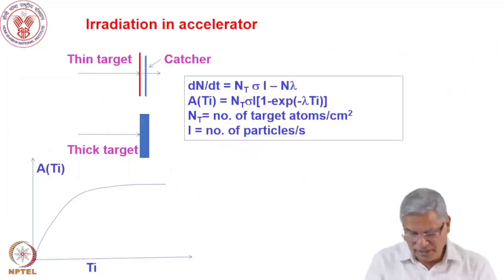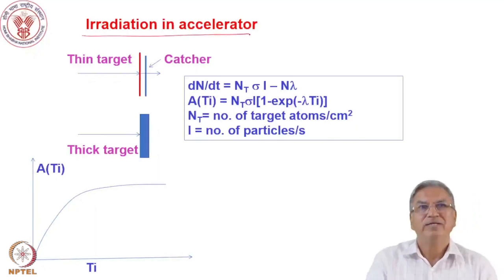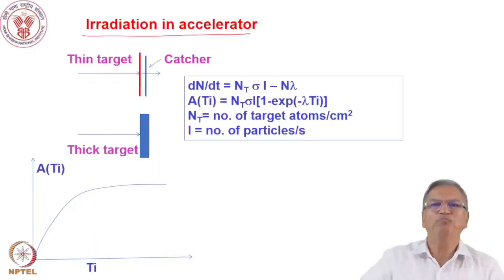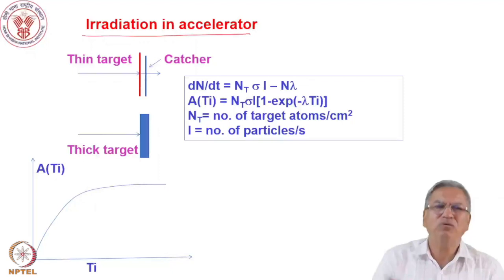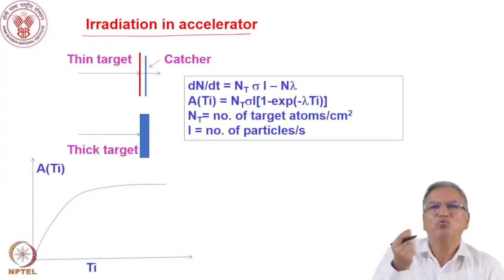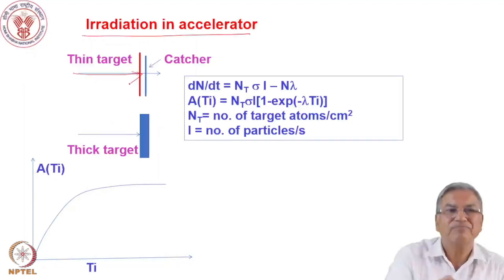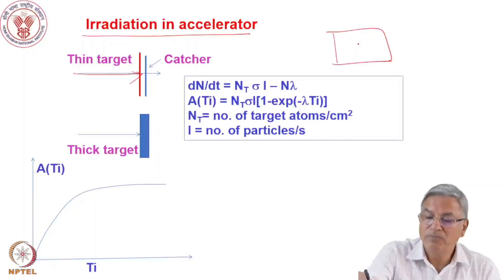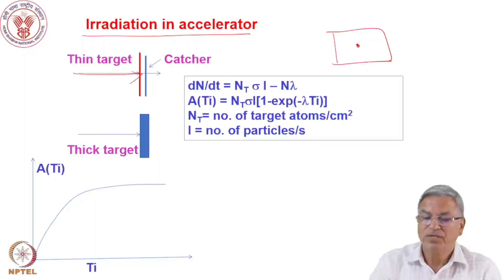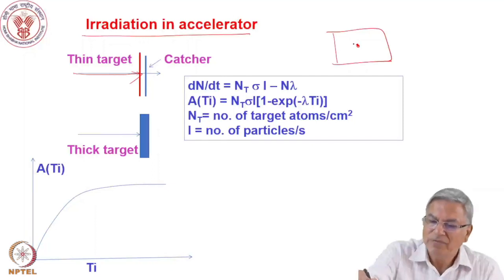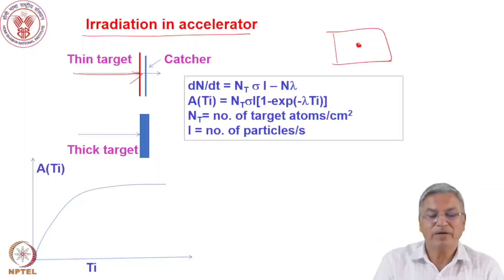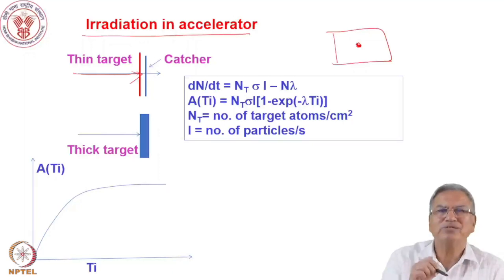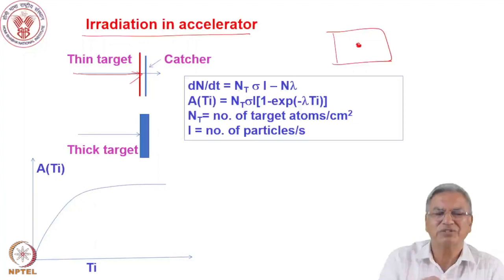Now let us discuss the irradiation of targets in an accelerator. Unlike in reactors — where you have a pool-like sea of neutrons and all target atoms are exposed — in the accelerator the projectile is a beam of dimensions 1 or 2 millimeters. You have a very thin beam of projectiles bombarding the target. So the entire target is not exposed to all the charged particles; only a very small area is exposed. Also, charged particles cannot travel far in the target, so you use very thin targets of a few microns.